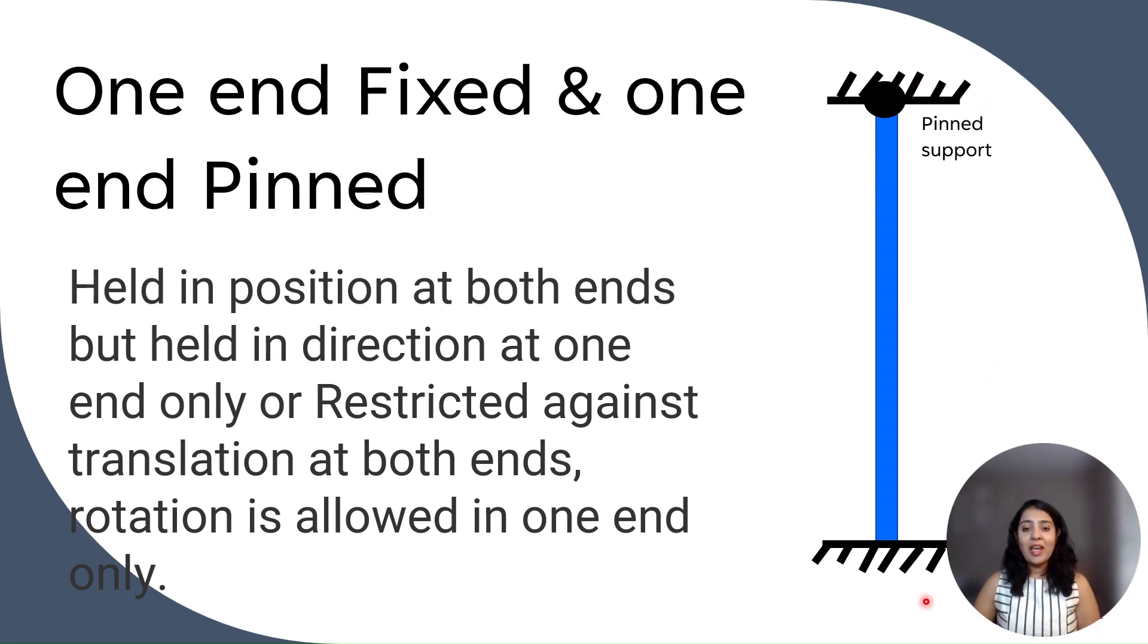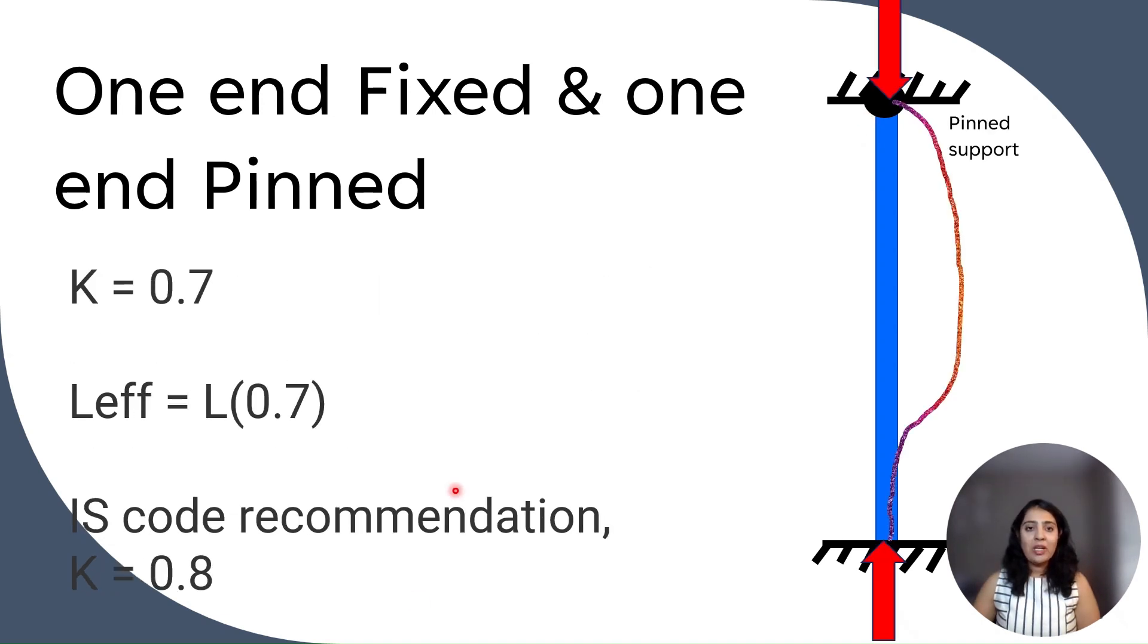Next case is one end fixed and one end pinned. So here, both ends are held in position, that is they are not allowed to translate. And at one support, that is at fixed support, it is not even allowed to rotate, but at pin support it is allowed to rotate. So if one end is fixed and one end is pinned and if we apply load, then the shape of buckling will be like this. So it is curved from the pin support and straight at fixed support. So effective length factor K is 0.7 for this case, and IS code recommendation is 0.8.